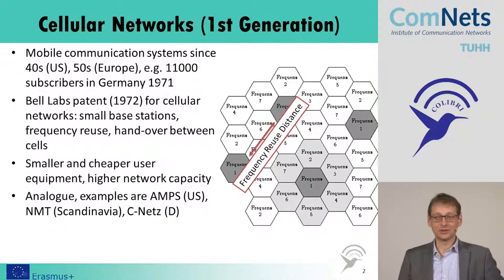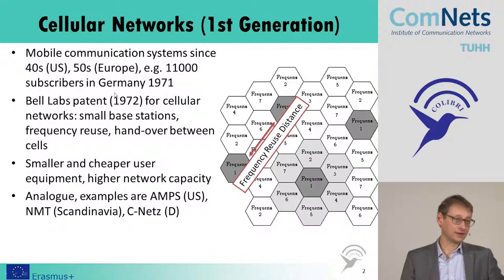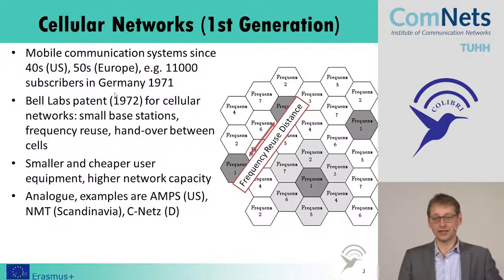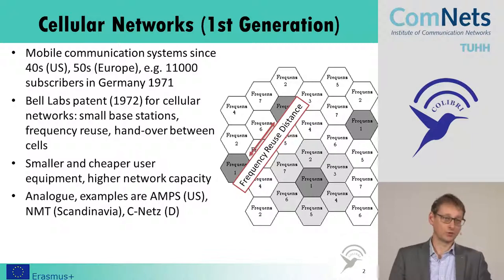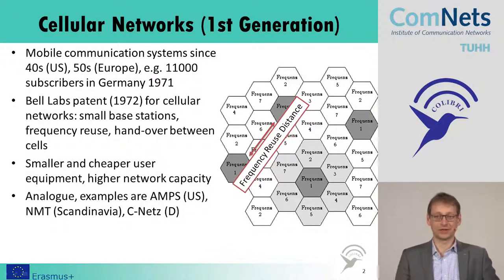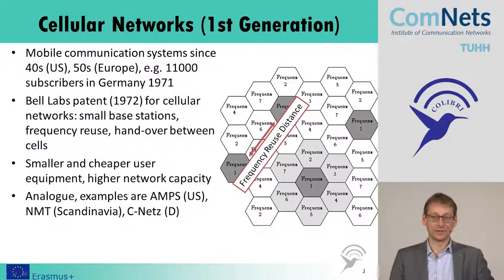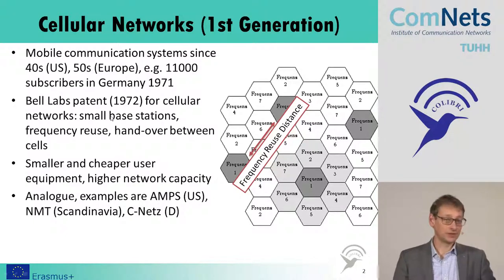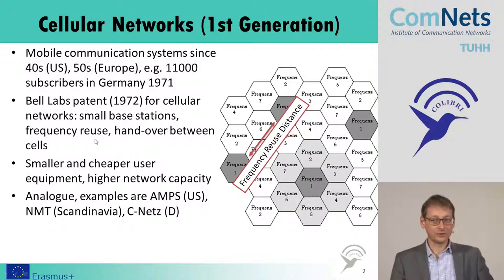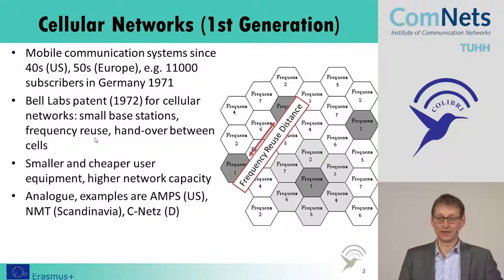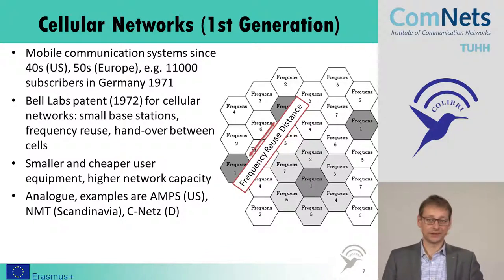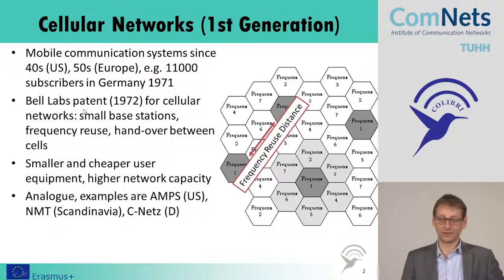This didn't change much over the next years. There was a patent in 1972 which changed the idea on how to do mobile communications for telephones, and the idea was to go cellular — to use small base stations, frequency reuse, and to do handover between the different cells. This was patented, and Bell Labs got that patent in 1972.